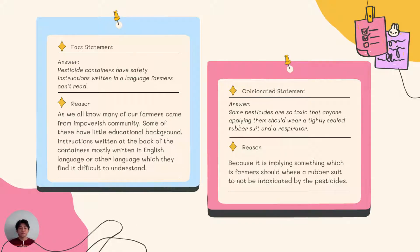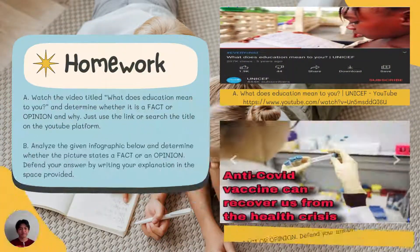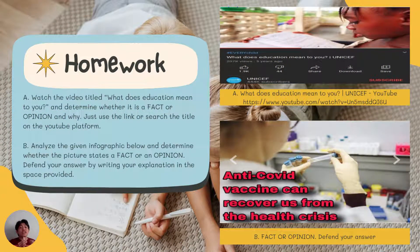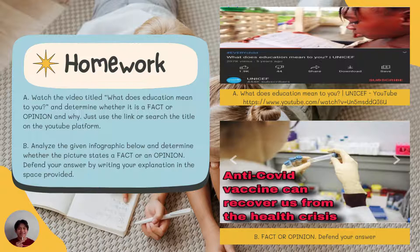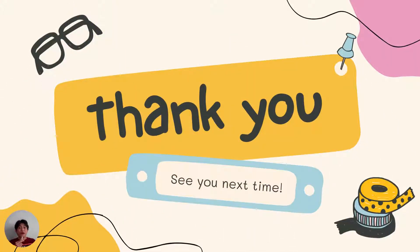Now for your homework. If you have internet connection at home, do activity letter A: Watch the video titled 'What does education mean to you?' and determine whether it is a fact or opinionated, and state your reason why. Just use the link or search the title on the YouTube platform. But in case you don't have internet access at home, you may do letter B: Analyze the given infographic below and determine whether the picture states a fact or an opinion. Defend your answer by writing your explanation in the space provided. That ends our session for today — see you on our next lesson. Thank you and goodbye!